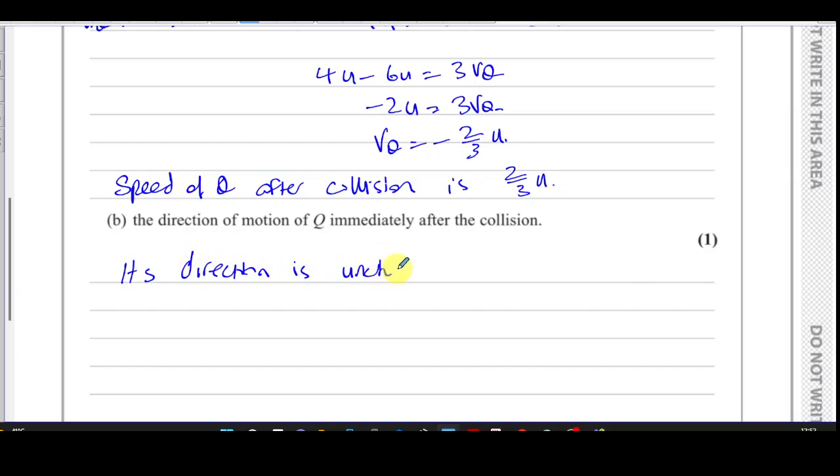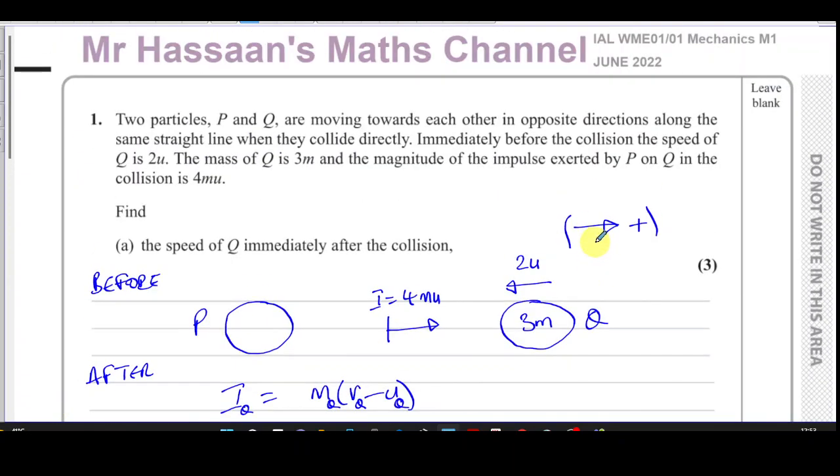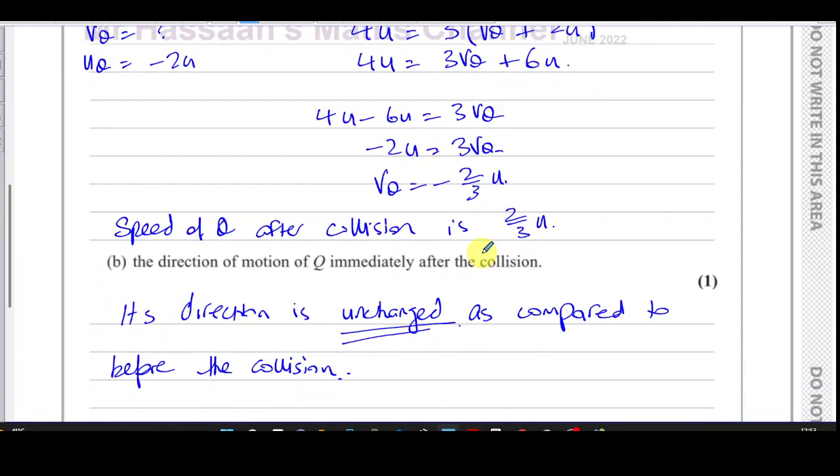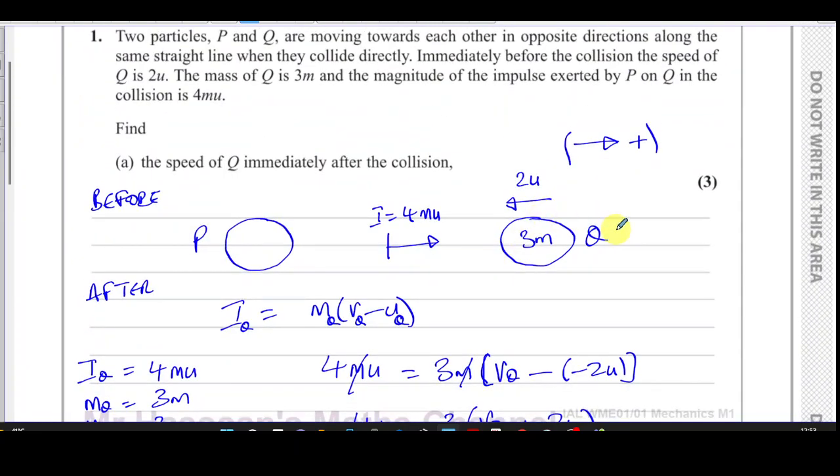We should describe its direction as: the direction is unchanged, meaning it's going in the same direction as compared to before the collision. Don't say left or right—that's a very important point that many students miss out on, and they lose marks for it. You lose a mark for it. So it's very important to take care of that particular situation and not write left or right, but write compared to how it was moving before the collision.